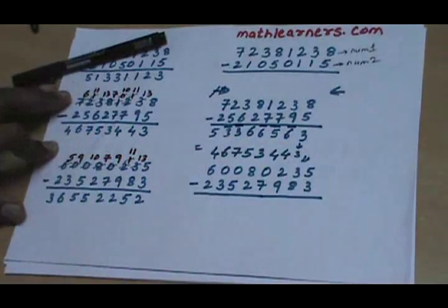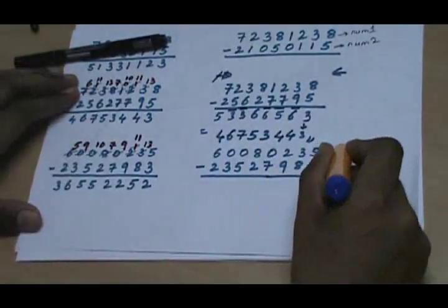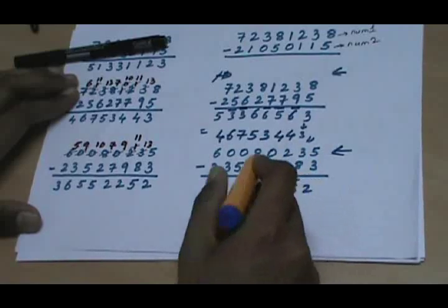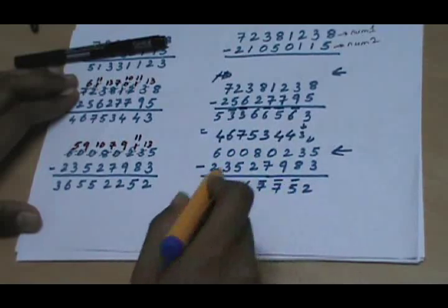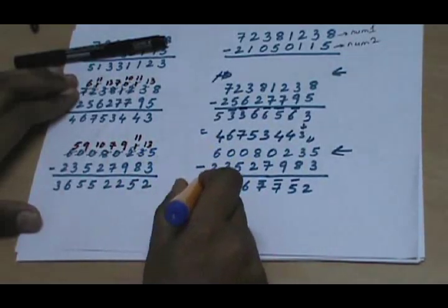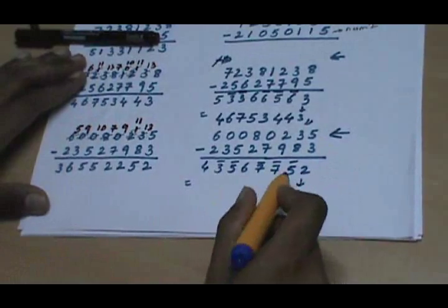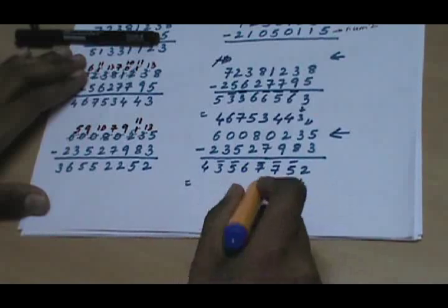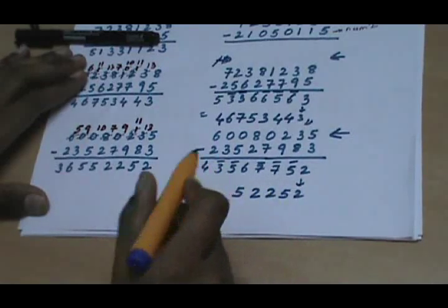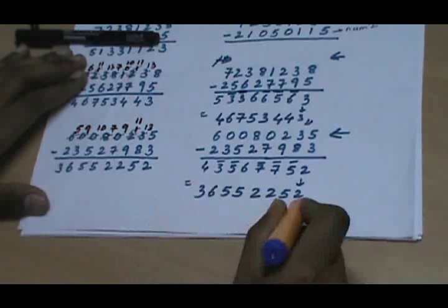Let's do one more subtraction example, going from right to left: 5 minus 3 gives 2; 3 minus 8 gives 5̄; 2 minus 9 gives 7̄; 0 minus 7 gives 7̄; 8 minus 2 gives 6; 0 minus 5 gives 5̄; 0 minus 3 gives 3̄; 6 minus 2 gives 4. This is a Vinkalam number. Converting: 2 is written as is; tens complement of 5 is 5; 9s complement of 7 is 2; 9s complement of 7 is 2; decrement 6 by 1 to get 5; tens complement of 5 is 5; 9s complement of 5 is 4 wait, 9s complement of 3 is 6; decrement 4 by 1 to get 3. That is your final answer.